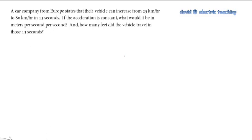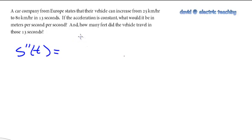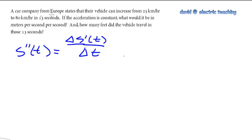Let's take a look at the idea of acceleration. If acceleration is my position function's second derivative, we have to understand that this derivative is the derivative of velocity, or the derivative of the first derivative. So we're looking at a change of velocity — s-prime — over a change of time. That's what the second derivative is, and so we're looking for a change of velocity over a change of time. That's how we're going to use this 25 to 80 change.